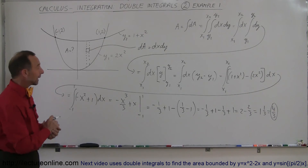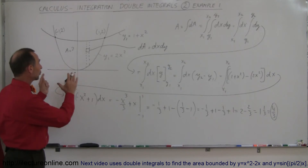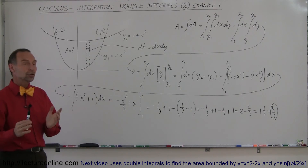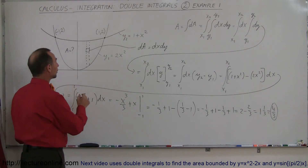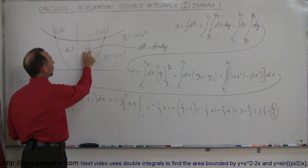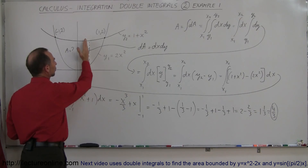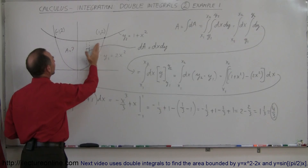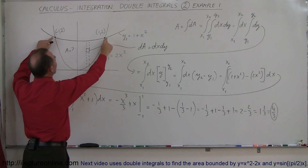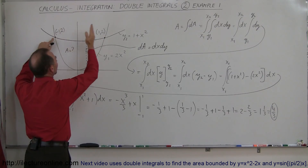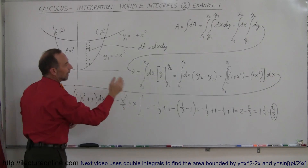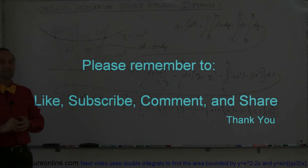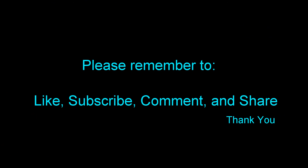That would be the result — the total area between those two curves is equal to 4 thirds. This is an illustration of how to do double integrals: start with dx dy, integrate first in the y direction using y limits defined by the curves, then integrate in the x direction using the leftmost and rightmost limits to get the total area. That's how we do double integrals. Thank you.